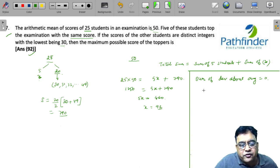Suppose the toppers have a score of x, so deviation for each topper must be x minus 50. So deviation for 5 toppers must be 5 into x minus 50. What about the deviation for the remaining 20?